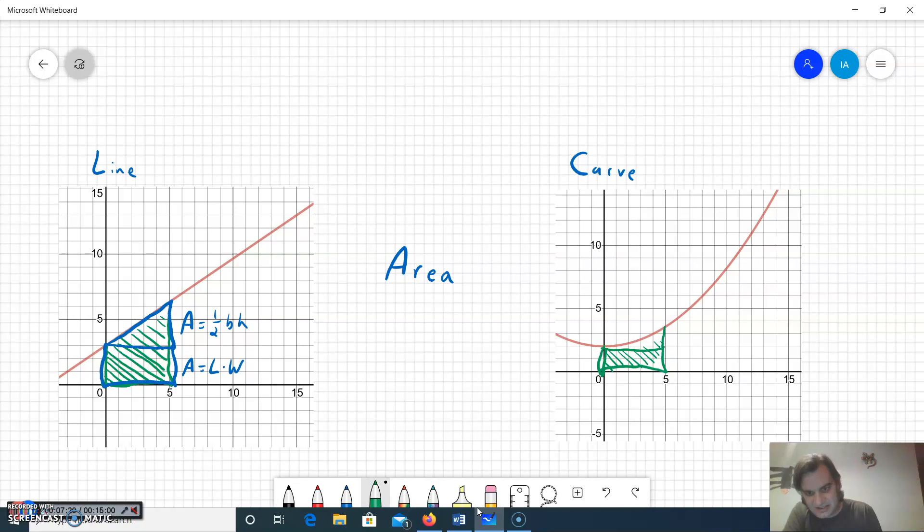Partly down here because I can make a rectangle out of the bottom part and do a length times width there, but the part above y equals 2 was connected to the curve up here.